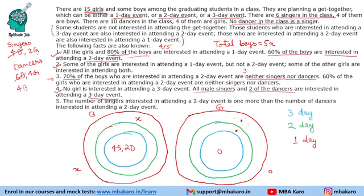In the three-day event we have 4 boy singers and 2 boy dancers. In the two-day region there are 3 more boy dancers. One remaining boy dancer can be placed either in the one-day or three-day region — this cannot be determined. Now let us look at the questions. How many boys are in the class? The answer is 50 boys.